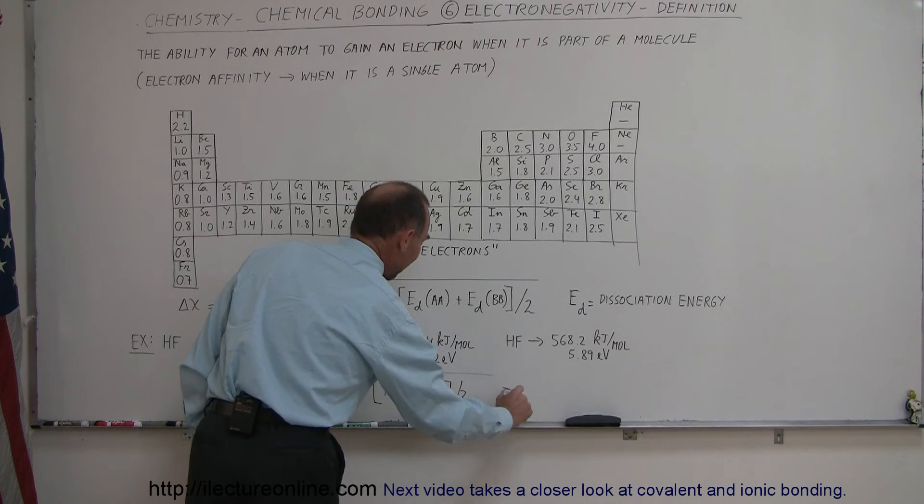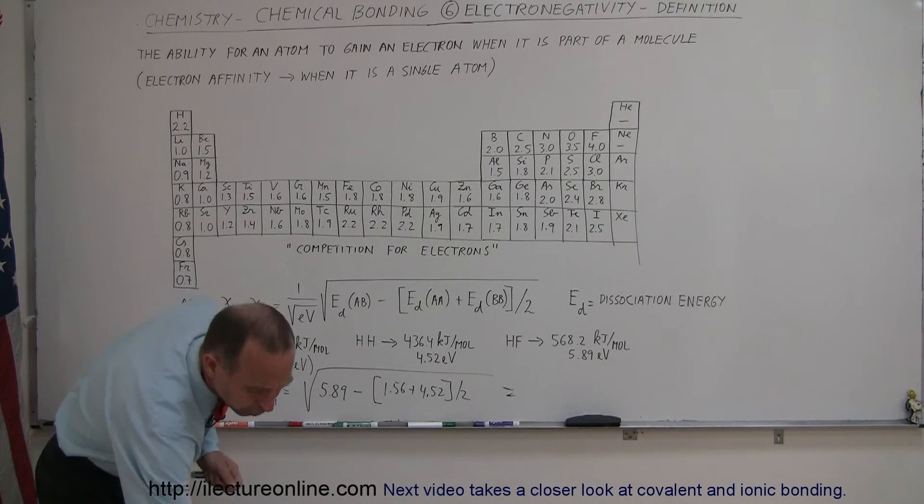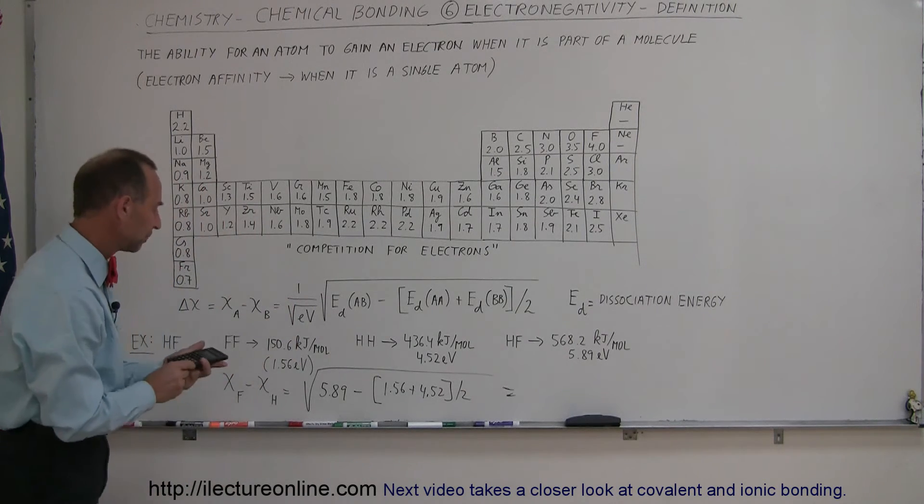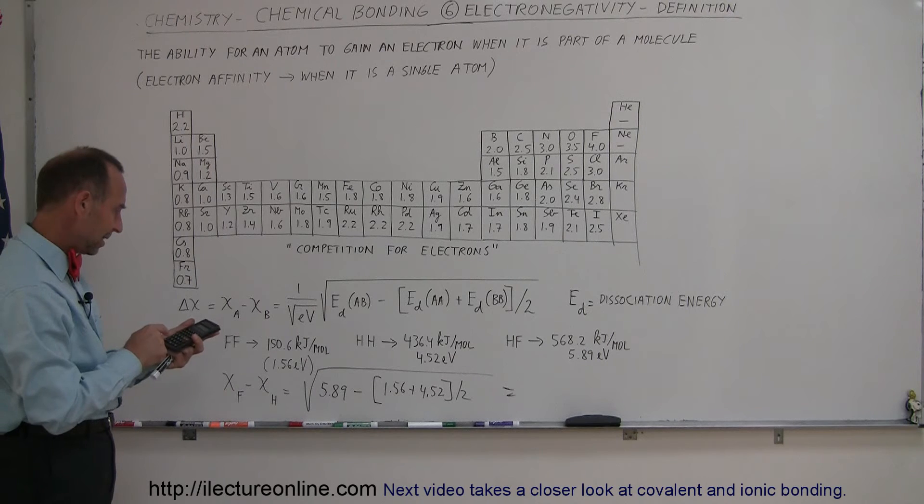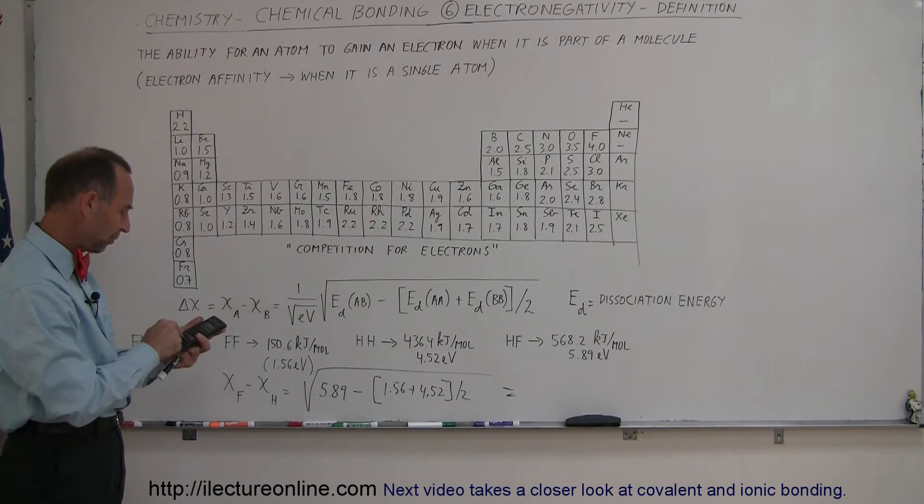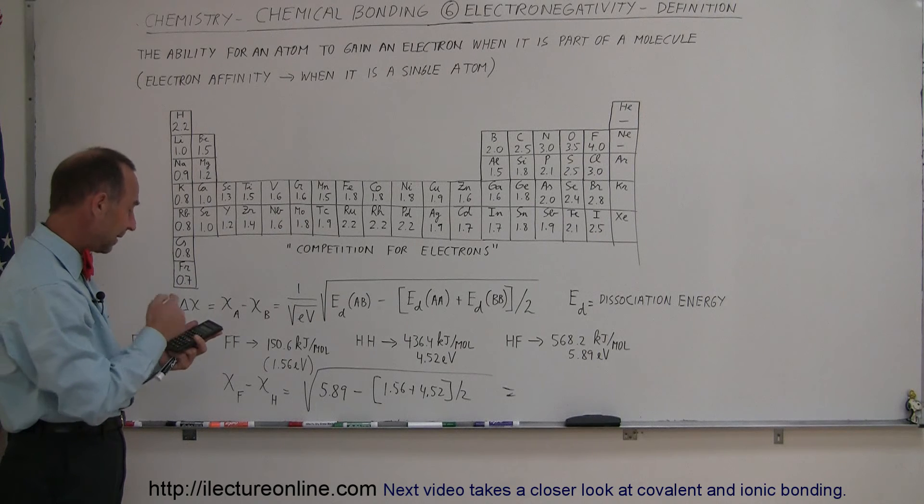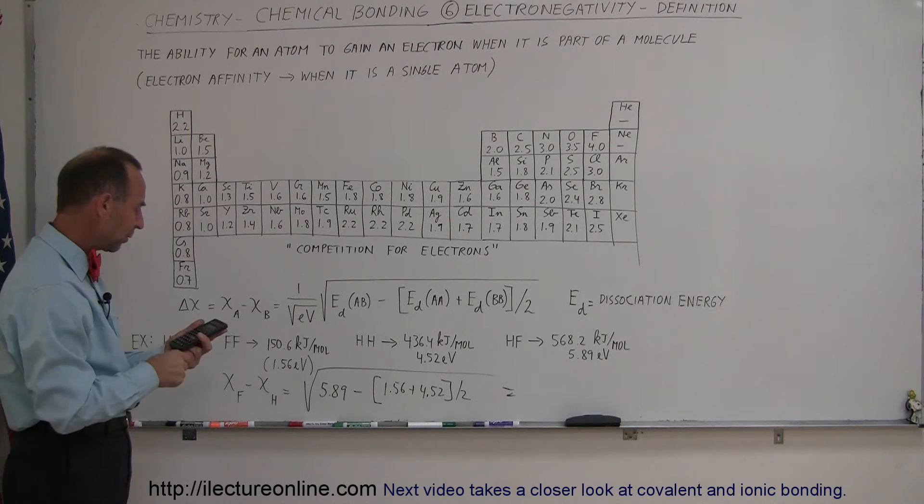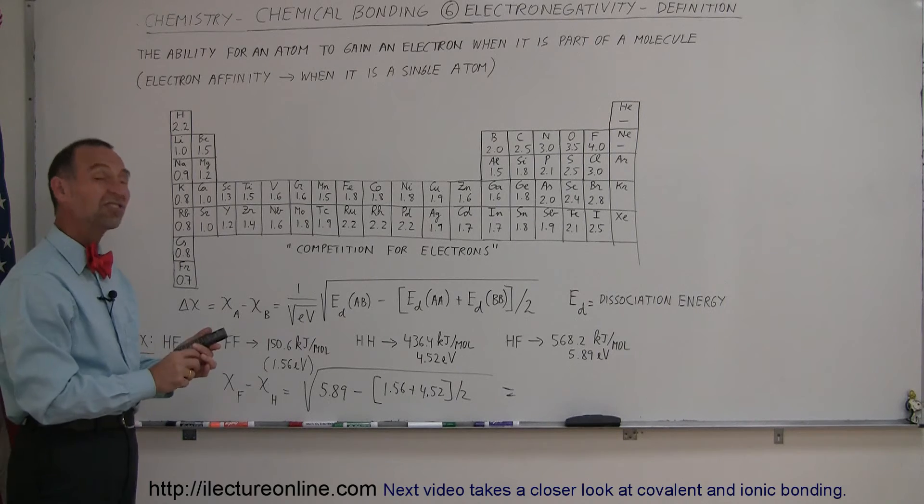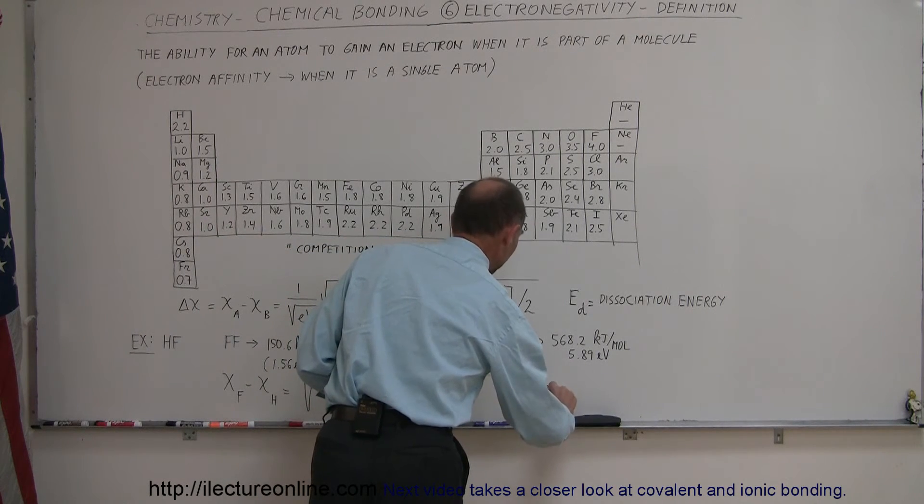And let's see what value we actually get by doing this calculation, and let's then compare that to what the actual number is. So let's see here, we take 1.56 plus 4.52, divide that by two, subtract that from 5.89, and then take the square root of that, and we get 1.69. We'll just put it down, so this is equal to 1.69.